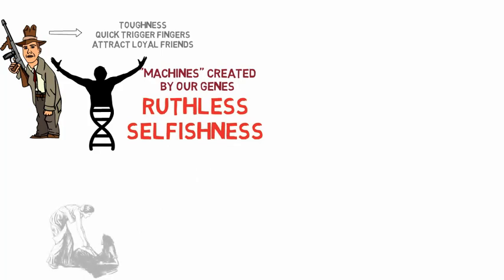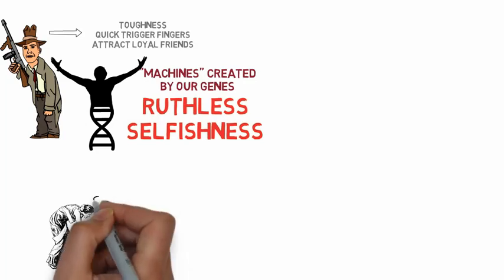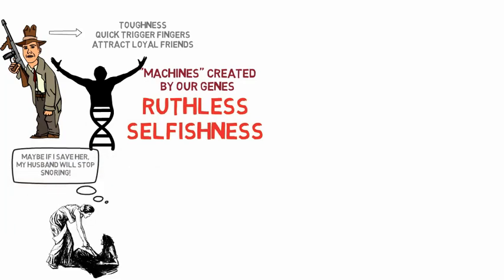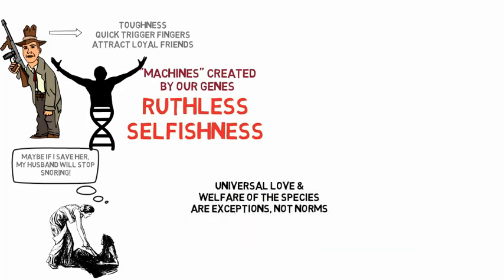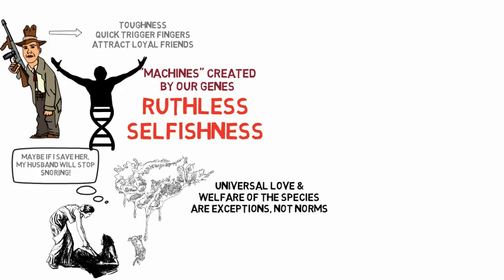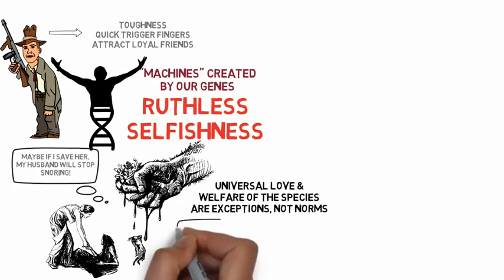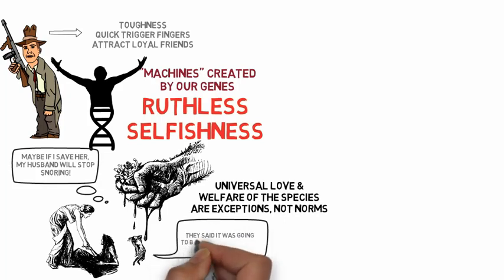This gene selfishness has implications in selfish behavior at the individual level, although there are special circumstances where genes may achieve their selfish goals in limited forms of altruism. Dawkins wants to remind us that concepts of universal love and welfare of the species are exceptions within evolution. He warns that the book is not advocating a morality based on evolution. On the contrary, he believes that a human society based simply on ruthless selfishness would be a very unpleasant society to live in. Dawkins advocates that we must acknowledge and understand our true nature so we can overcome them through educating ourselves in generosity and altruism.